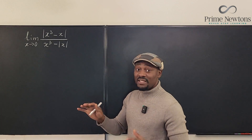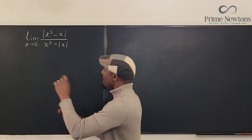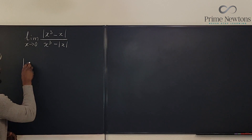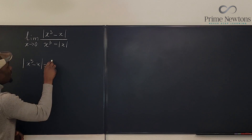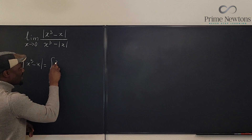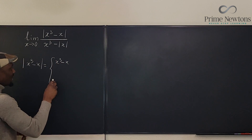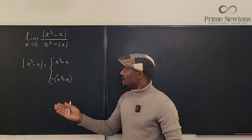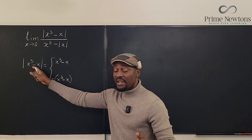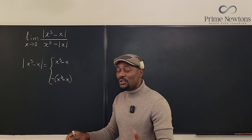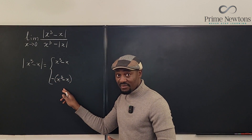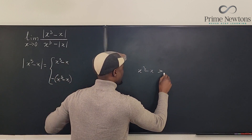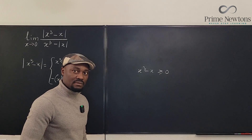The first thing you should do is rewrite every part that has absolute value. We have the numerator and a part of the denominator. We're going to say the absolute value of x³ minus x equals what is inside — x³ minus x — or the negative of what is inside: minus(x³ minus x). Every absolute value function equals either itself or the negative of what is inside. We just need to know when each case is true.